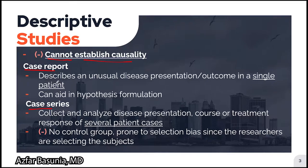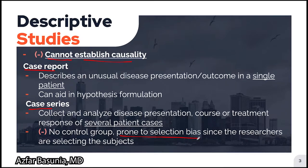In a case series, researchers collect and analyze disease presentation, course, or treatment response of several patient cases. Because the researchers are selecting the subjects and there is no control group, case series are more prone to selection bias. We will talk more about selection bias and other types of biases in a future video.